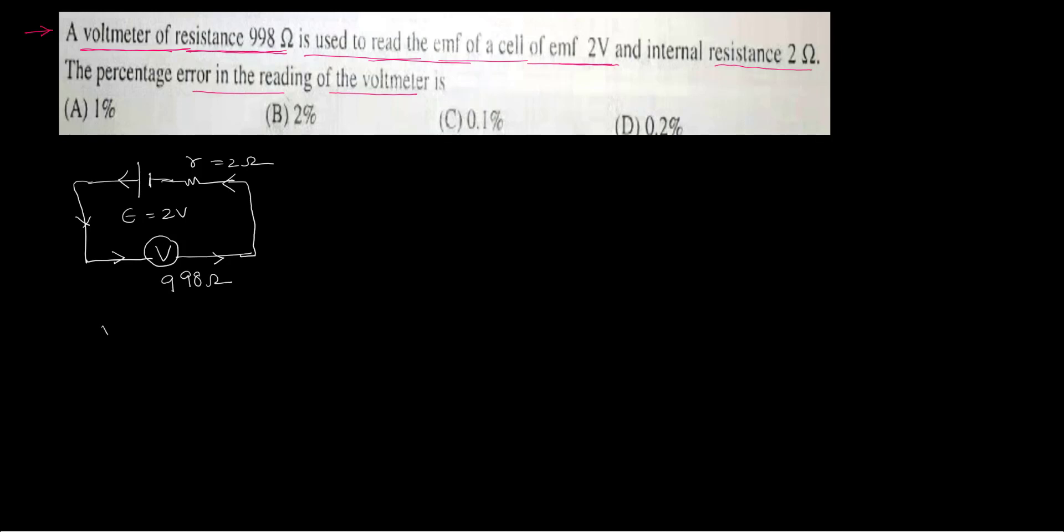What is the voltage drop across the voltmeter? It is simply I times the resistance of that voltmeter. What is the I of that circuit? Total EMF by total resistance. EMF is E. Total resistance is resistance of the voltmeter and the resistance of that battery, r. So let us substitute these values.